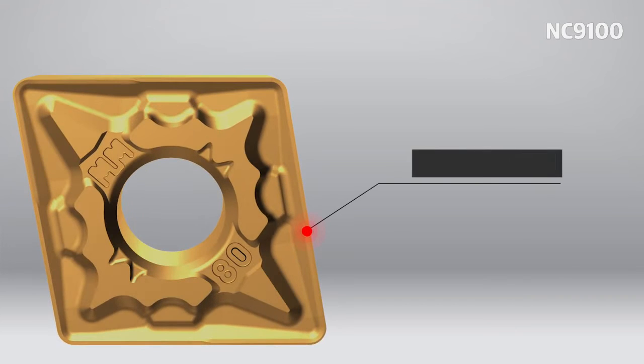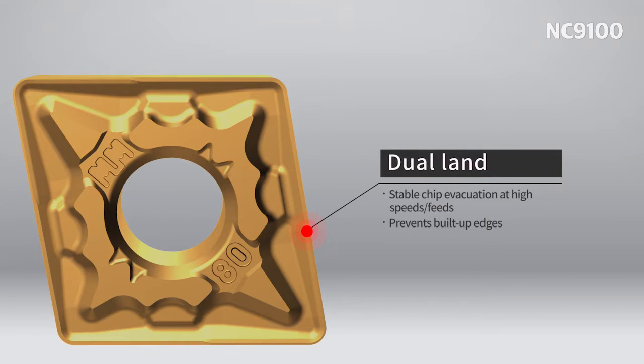The MM chip breaker with its dual inclined land design ensures a stable lifespan and minimizes built-up edges forming.